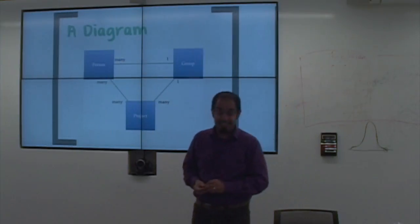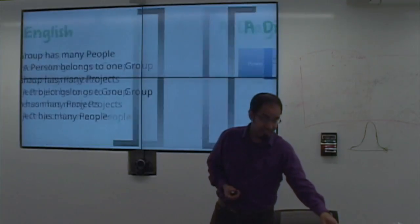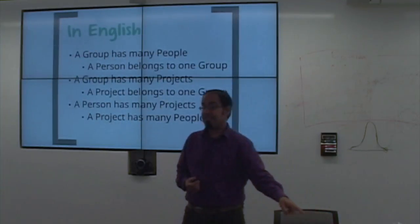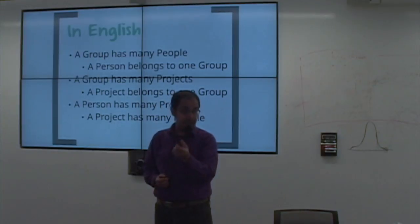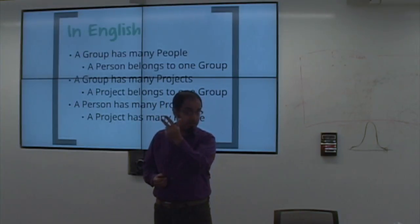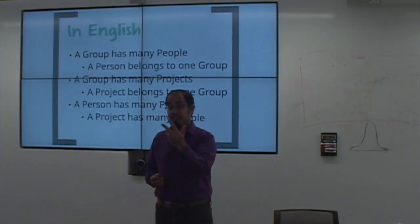What you do is you draw a diagram like this to get started. Making this list is the first important step — defining the right objects in your system. I've defined group, person, and project as the three objects in my system. That already took some thinking about what the right objects were. So now I've defined those, and I've defined the relations between them.